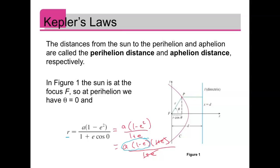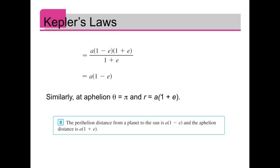And so the formula for perihelion is just a times one minus e. Yes, for the radius, the distance. Similarly for the aphelion, we can plug in pi for theta, and we're going to end up with r equals a times one plus e. So the perihelion distance from a planet to the sun is a times one minus e, where a is the length of its semi-major axis, meaning half the length of the major axis. And then the aphelion is a times one plus e.